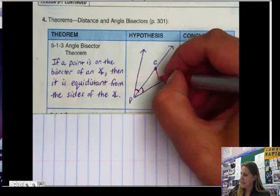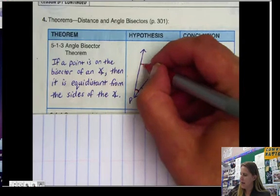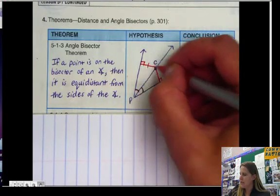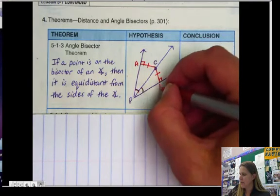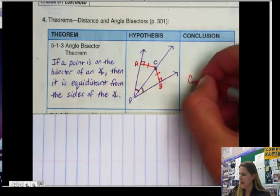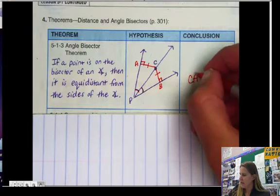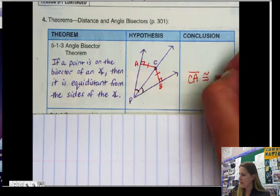So if it's equidistant, it needs to come down at a right angle. So this is congruent to this. So if we were to give this extra names, we would say this is A and this is B. We could say that CA is congruent to CB.